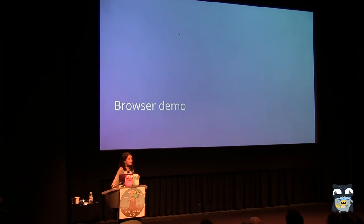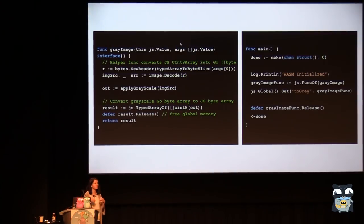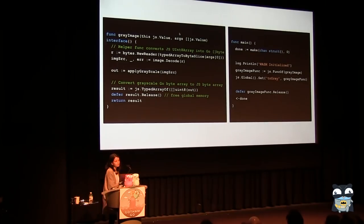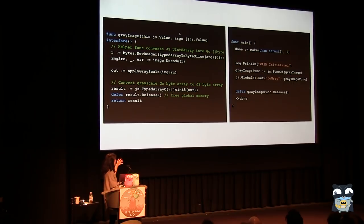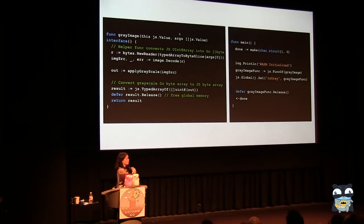I'll give a quick demo of a fun application I built with Go and WASM. This demo takes a JavaScript byte array representing an image, turns it into grayscale in Go, and returns the grayscale image as a JavaScript byte array so it can be displayed on a web page. I'm taking advantage of the optimized image library in the Go standard library to apply this transformation. The function takes the JavaScript input — a JavaScript byte array — converts it into a Go byte slice, passes it into a helper function that applies the image transformation, and then converts the transformed image bytes back into a JavaScript byte array using the JS TypedArray function.